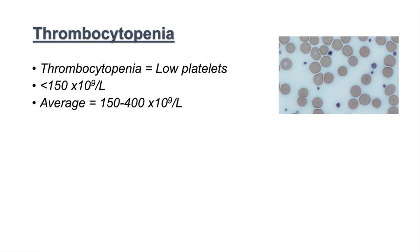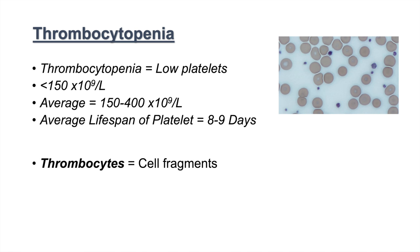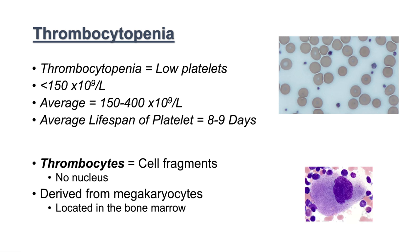The normal range of platelet count is about 150 to 400. The average lifespan of a platelet is about eight to nine days. Thrombocytes themselves are actually cell fragments — they're not actual cells. They do not contain a nucleus, and they're derived from megakaryocytes, which are large cells located in the bone marrow. Here's a picture of a megakaryocyte.